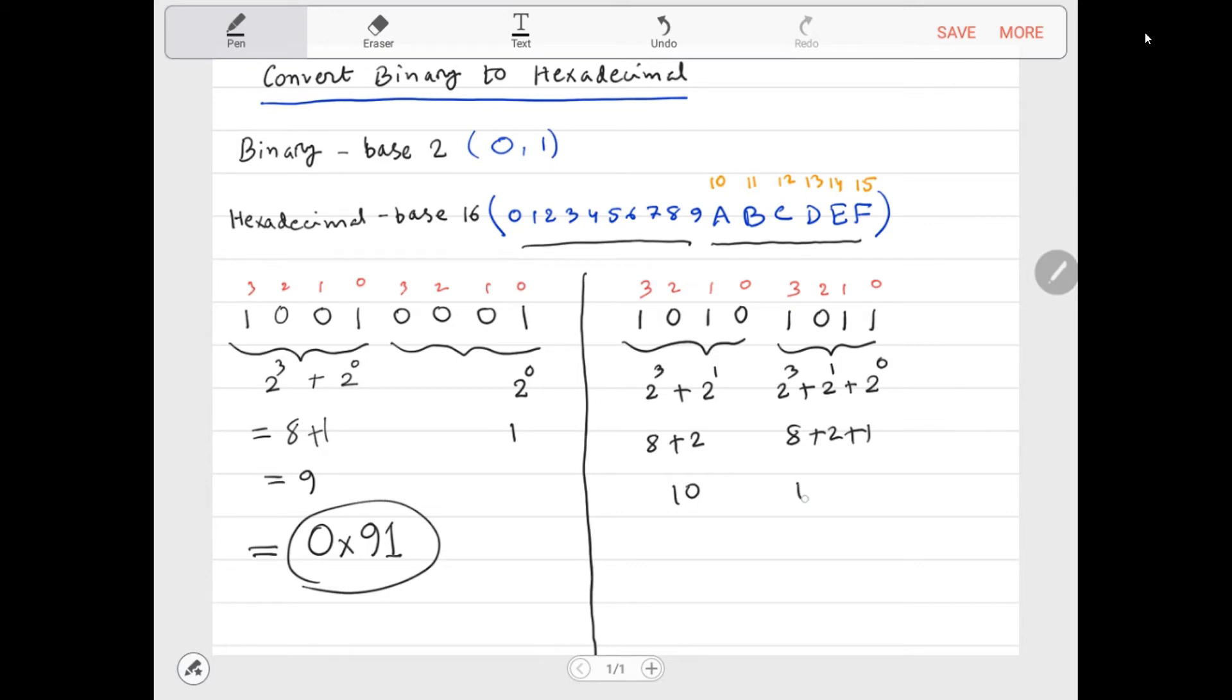But there is no 10 in hexadecimal. Instead of 10, you have A, so you replace 10 with A. And you don't have 11 in hexadecimal, you have B, so you replace 11 with B. So basically this binary in hexadecimal is 0xAB.